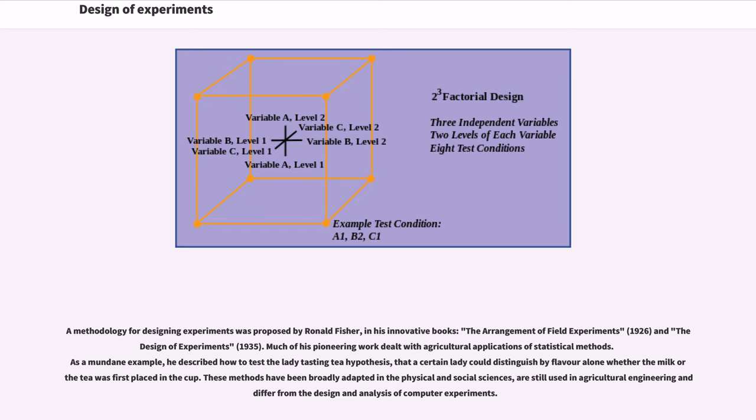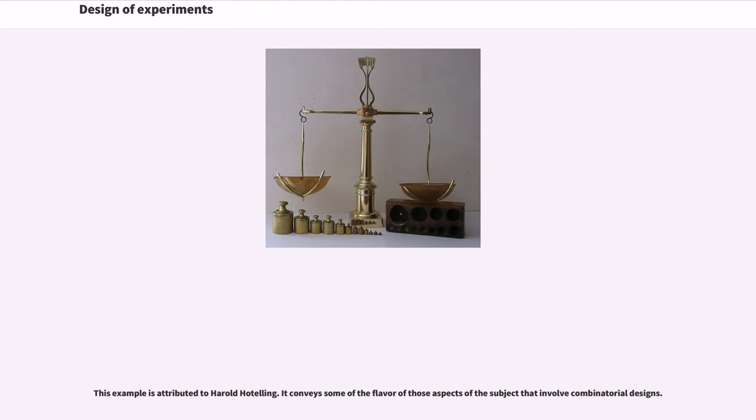As a mundane example, he described how to test the lady-tasting tea hypothesis, that a certain lady could distinguish by flavor alone whether the milk or the tea was first placed in the cup. These methods have been broadly adapted in the physical and social sciences, are still used in agricultural engineering and differ from the design and analysis of computer experiments. This example is attributed to Harold Hotelling. It conveys some of the flavor of those aspects of the subject that involve combinatorial designs.